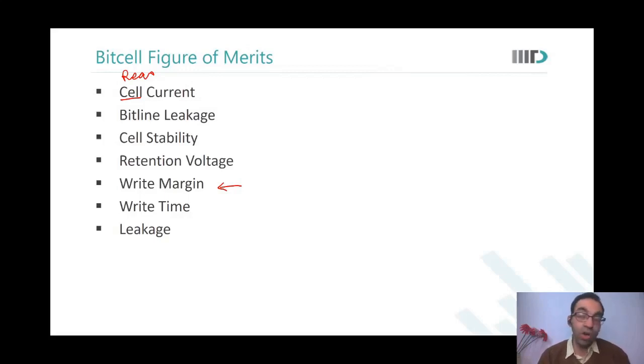Leakage is a very important figure of merit because, as we just saw, out of 1024 words, even when the memory is accessed, only one word is on and the remaining 1023 words are off. When they are off, they are simply leaking, not doing anything else. So leakage is a very important figure of merit for a memory cell.